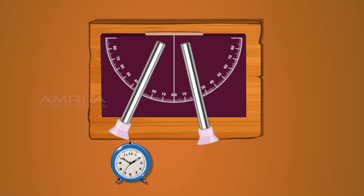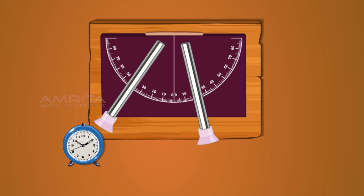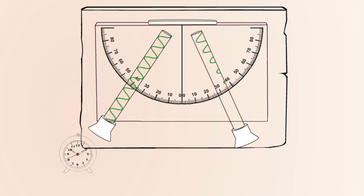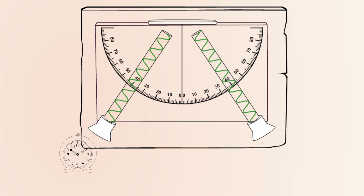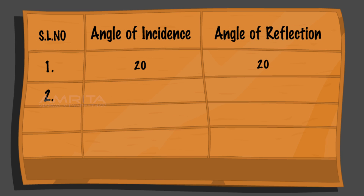Move the lower end of tube one at an angle of 40 degrees on the protractor and position the timer at the mouth of tube one. You can hear sound waves passing through tube one. Now move the lower end of tube two to catch the sound waves from tube one. Once the maximum volume is obtained through tube two, fix the tube at that angle. Note the angle of incidence and angle of reflection. Both are 40 degrees.